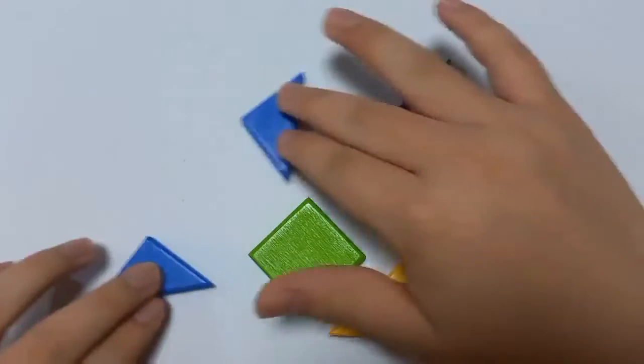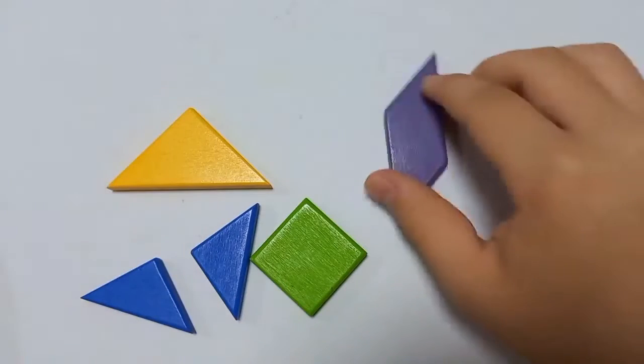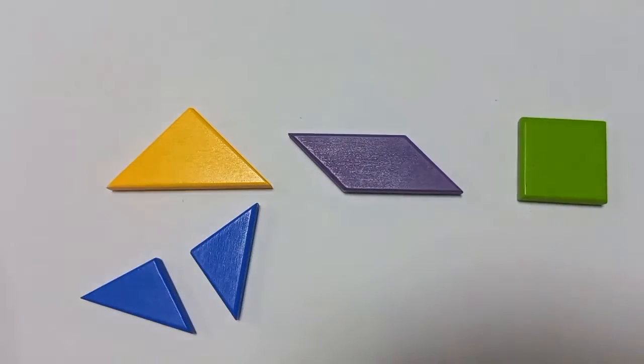Now, if you have two small triangles, you can make one medium triangle, a parallelogram, and a square.